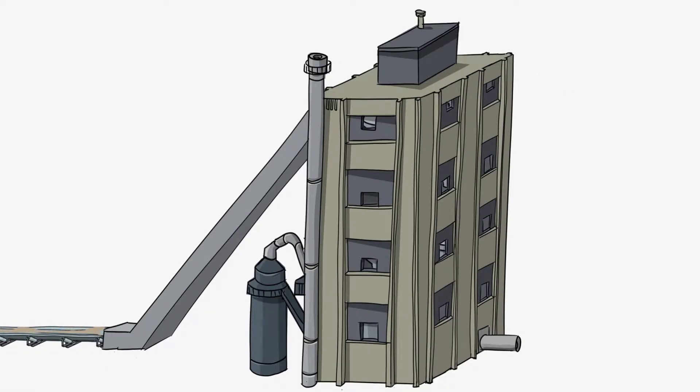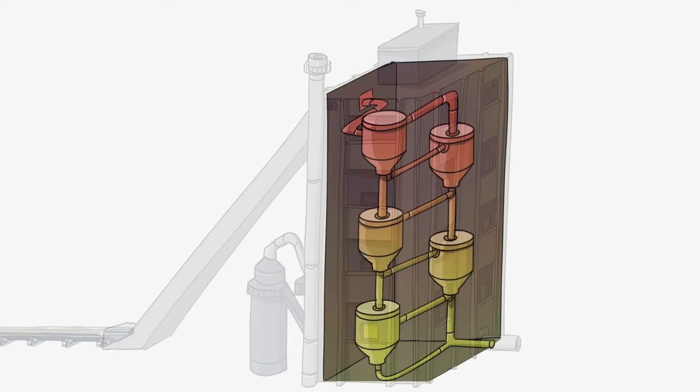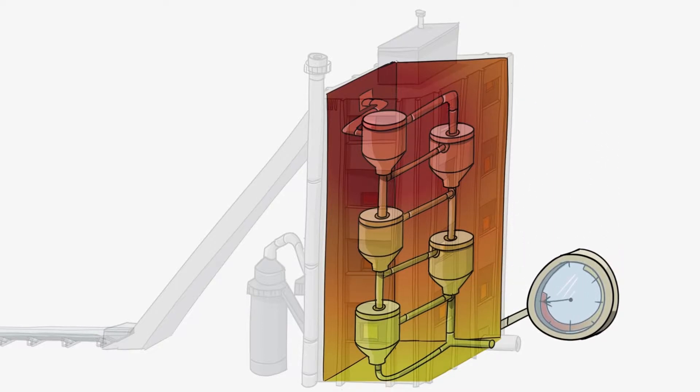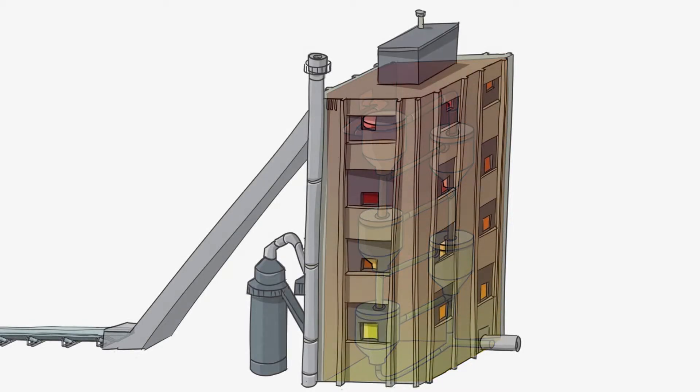Next, the raw meal is put through a burning process. The first part of this involves the raw meal being heated in a series-linked 80-metre-high cyclone tower, which acts as an efficient heat exchanger. Heating converts the calcium carbonate into calcium oxide and carbon dioxide. This process is called calcination.